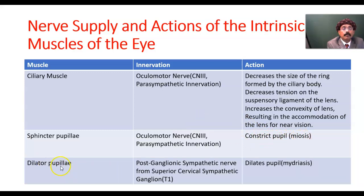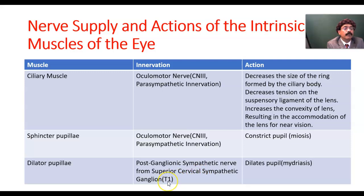Dilator pupillae muscle innervation: postganglionic sympathetic nerve from the superior cervical sympathetic ganglion, which carries the sympathetic fiber from the T1 segment of the spinal cord. The function or action of the dilator pupillae is to dilate the pupil — we call it mydriasis.